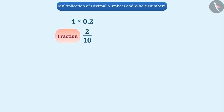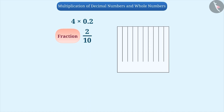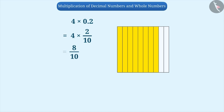Let's find the result of 4 multiplied by 0.2. The decimal number 0.2 can be represented as the fraction 2 by 10. This shows that if we consider 1 square as a unit, then 2 parts out of 10 equal parts are 2 by 10. Since 0.2, which is 2 by 10, is repeated 4 times, we will repeat these 2 parts for 4 times. From this, we get a total of 8 shaded parts out of 10. Hence, the total shaded part will be 8 by 10.